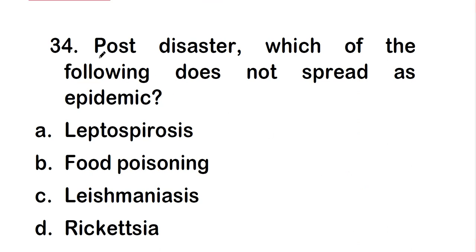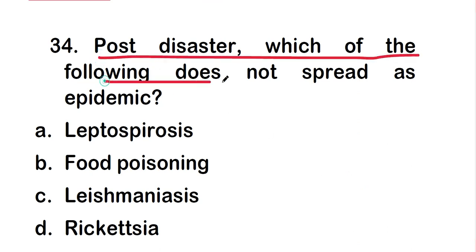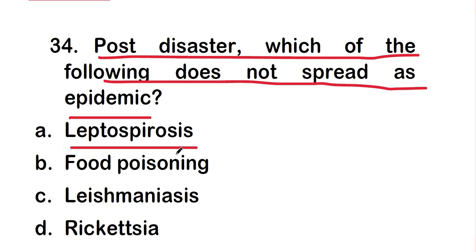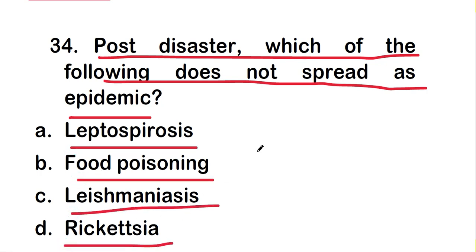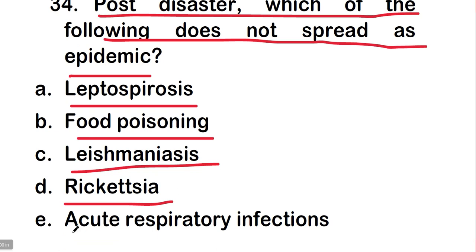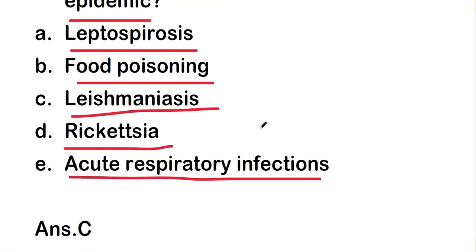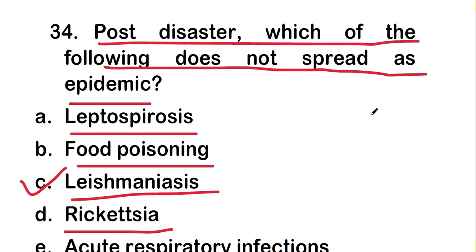Next question: post-disaster, which of the following does not spread as an epidemic? Options are leptospirosis, food poisoning, leishmaniasis, rickettsia, or acute respiratory infection. The right answer is option C — leishmaniasis does not spread as an epidemic post-disaster.